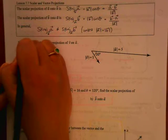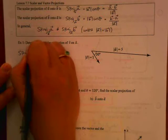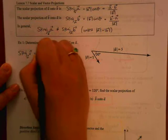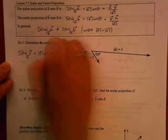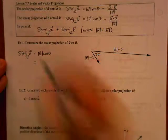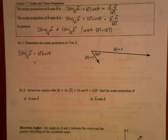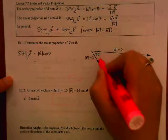All right, scalar projection of V onto U is magnitude of V cos theta, so essentially we're looking for this shadow of